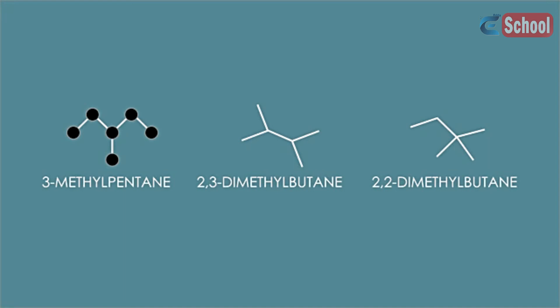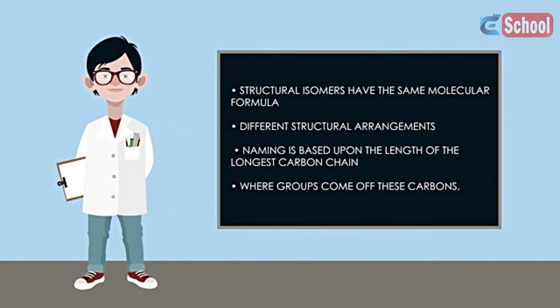And there are two more structural isomers based on butane, with only four carbon atoms in the longest chain: 2,3-dimethyl butane and 2,2-dimethyl butane.